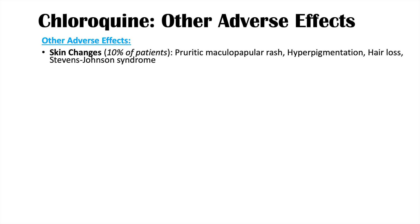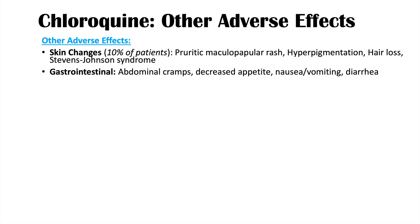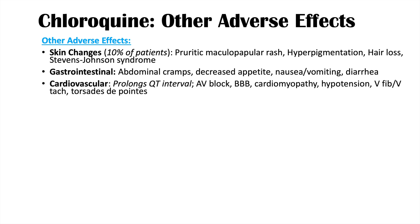Gastrointestinal effects include abdominal cramps, decreased appetite, nausea, vomiting, and diarrhea. Cardiovascular complications include prolonged QT interval — especially important when used with other medications that also prolong QT. You can also see AV block, bundle branch blocks, cardiomyopathy, hypotension, ventricular fibrillation, ventricular tachycardia, and torsade de pointes related to the prolonged QT interval.